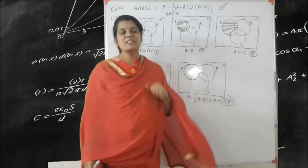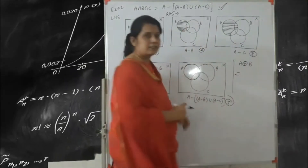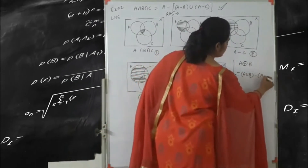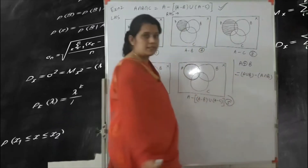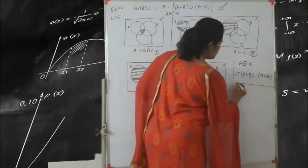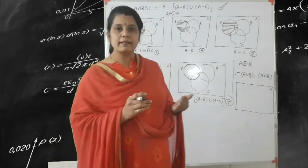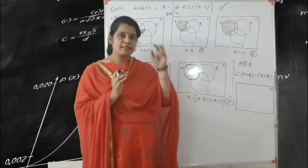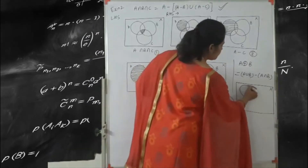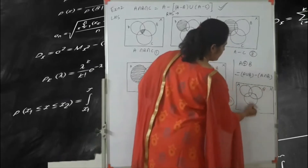Next one is the A ring sum B — that is symmetric difference. A ring sum B is equal to A union B minus A intersection B. This is the formula of A ring sum B. So for the diagram, first we draw the universal set, then we use the main diagram. Always keep in mind, you write the universal set first. So here we draw three circles: A, B and C.